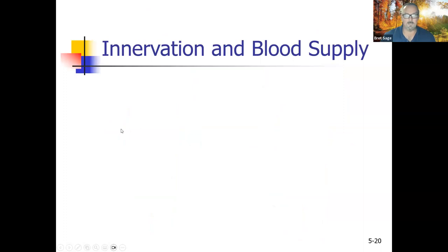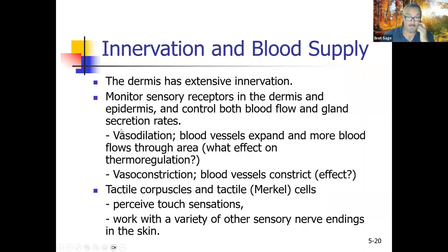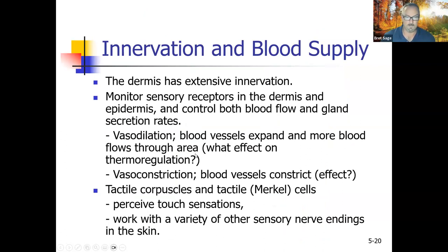The dermis has extensive innervation monitoring sensory receptors and controlling blood flow and glandular secretion rates. Vasodilation is the opening up of blood vessels allowing more blood to flow through an area. When blood vessels expand, more blood flows through — this has an effect on thermoregulation, the ability to control body temperature.